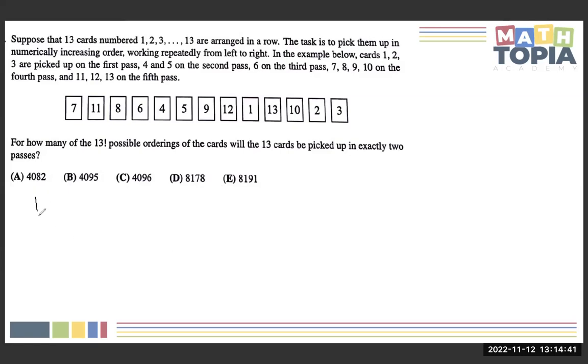Either we pick up 1 on the first pass and then the numbers 2 through 13 on the second pass, or we pick up the numbers 1 through 2 on the first pass and then the numbers 3 through 13 on the second pass, or we pick up the numbers 1 through 3 on the first pass and the numbers 4 through 13 on the third pass,